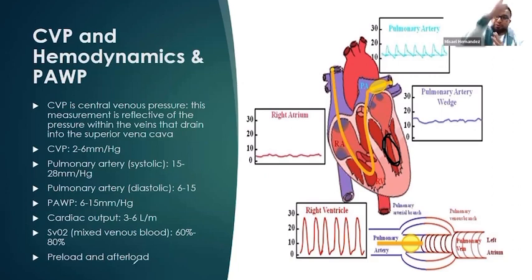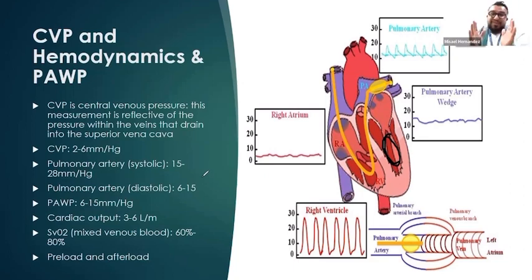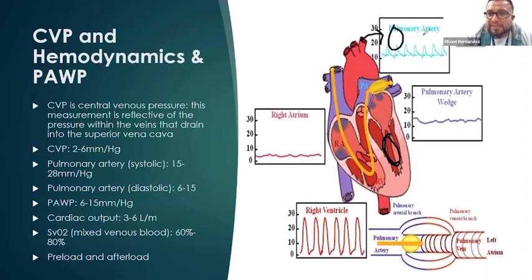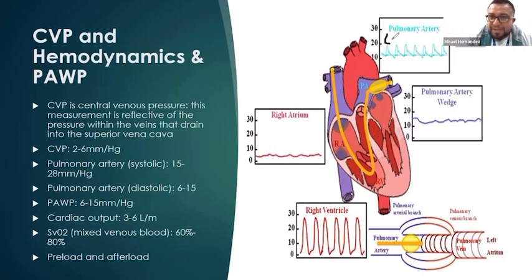Afterload is how much force the left ventricle has to exert against peripheral resistance to push blood systemically. If someone has atherosclerotic plaque or peripheral artery disease, the afterload is high — it has to exert more force. Imagine the aorta as a nice open vessel — that's easy to pump through, so afterload is low. But if it's stenosed due to atherosclerotic plaque, the left ventricle has to pump harder through the narrow lumen, making afterload high.